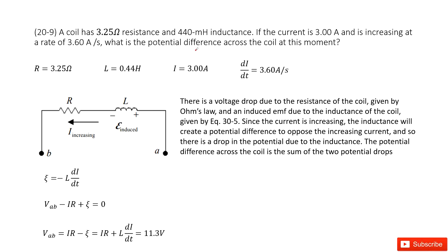We need to find the potential difference across this coil. That means we need to find the voltage between point A and point B, and then we look at this loop.